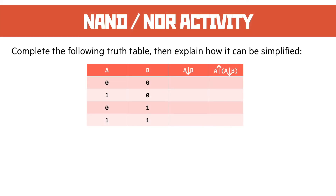Our first activity is a NAND or NOR activity. There are a bunch of things they can do to ask you questions about this, but usually it's about completing truth tables. What we've got here is a bunch of values for A and B, and you need to complete the truth table to give us A NOR B, and then A NAND (A NOR B). The follow-up part of the question — explain how it can be simplified — will make a lot more sense when we get to the end result.